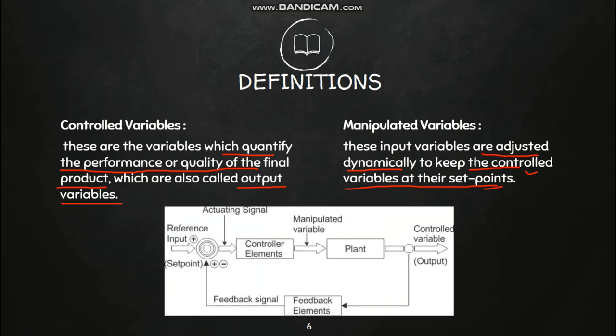To understand these terms better, let us look at a block diagram. You can see the general block diagram of any control system. There are certain components to remember when dealing with a block diagram. The first is the reference input — the input given to the system — which is given to the controller. The controller takes action to control the system and generates a manipulated variable, which is then given to the plant. The output of the plant is the control variable.